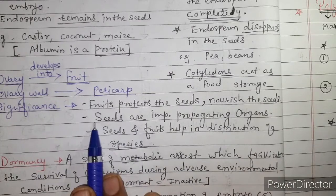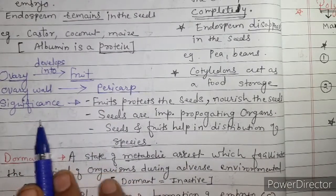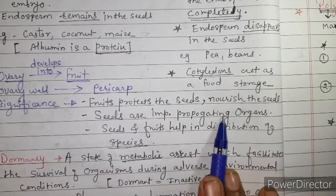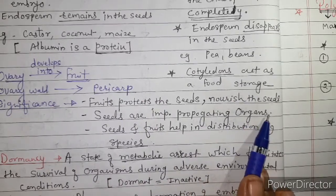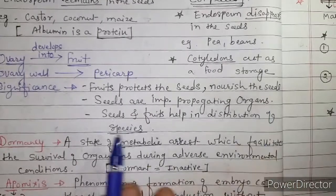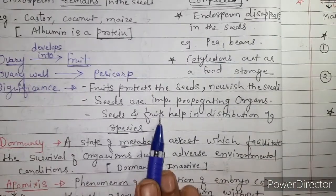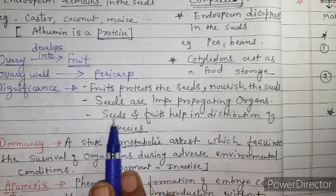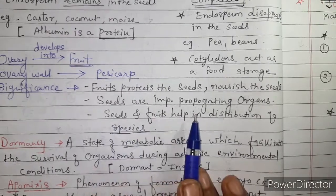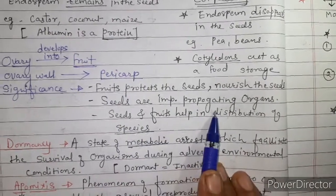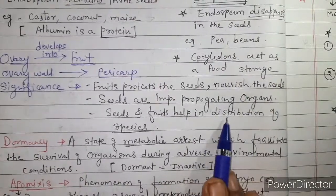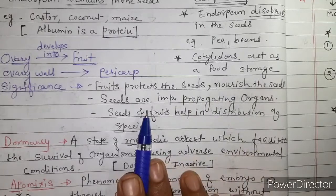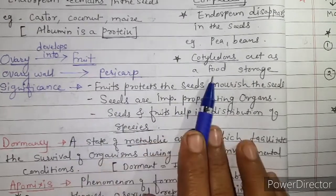Second significance: seeds are important propagating organs or propagating units for plants. Seeds and fruits help in the distribution of the species — seeds are dispersed from one place to another and give rise to new plants, so they are called propagating organs. This is the significance of seeds and fruits.